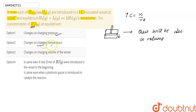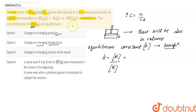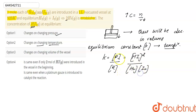Next: does the concentration of HI change on changing temperature? As we know, the equilibrium constant K depends only on temperature. If temperature changes, the equilibrium constant also changes. The equilibrium constant equals [HI]² divided by [H₂][I₂]. If the equilibrium constant changes, the concentration of HI also changes, so this statement is also correct.